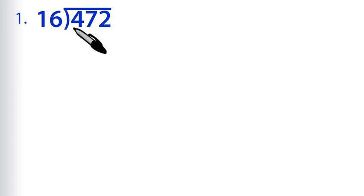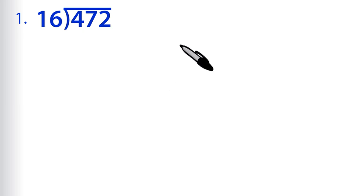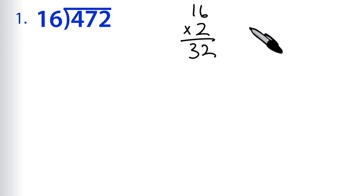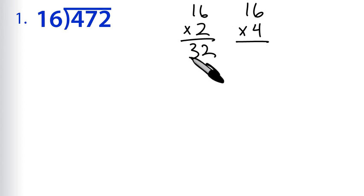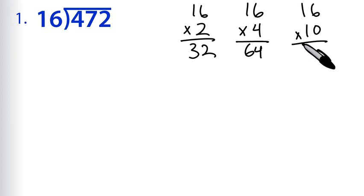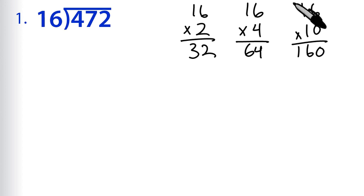The first thing we need to do is choose what multiples of 16 we want to use as our partial answers. Multiplying by 2 is always a nice easy one, so let's start with that: 16 times 2 is 32. Let's also double that — 16 times 4 is 64. And multiplying by 10 might be useful: 16 times 10 is 160. Those should be good for now.